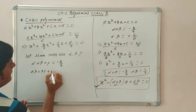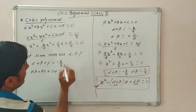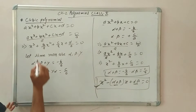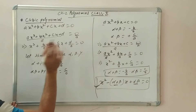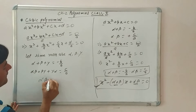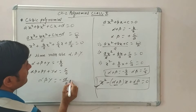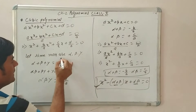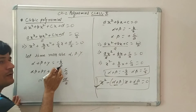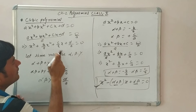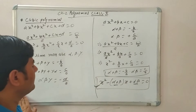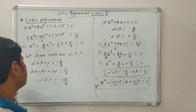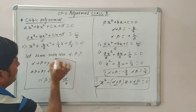The second relation: alpha·beta + beta·gamma + gamma·alpha = c upon a, which is the coefficient of x upon the coefficient of x³. The third relation: alpha × beta × gamma = minus d upon a, which is the negative of the constant term upon the coefficient of x³.